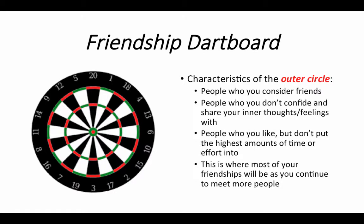Finally, the outer circle is the bigger part that goes around the outer perimeter and it's the biggest because this is where most of your friendships will be, especially as you get older. These are people who you consider friends — not good friends, not great friends, but people you're cool with, get along with, and like to be around. These are people you don't necessarily confide your inner thoughts and feelings with — they don't have the privilege of knowing everything about you. These are people you like but don't put the highest amounts of time or effort into.